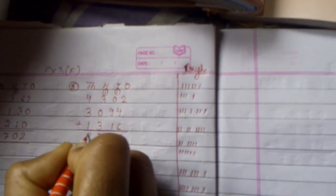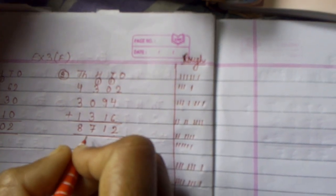Now 4 is there: 1, 2, 3, 4. Then 3: 1, 2, 3. Then 1. Okay. Now add all together: 1, 2, 3, 4, 5, 6, 7, 8. So here we have written 8. So we have got the number 8712. So you will complete exercise 3F in your book and copy both.